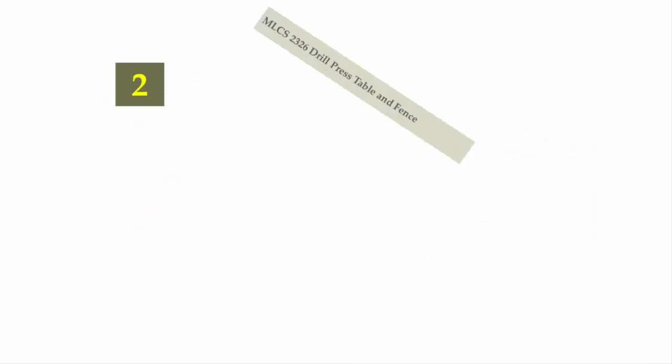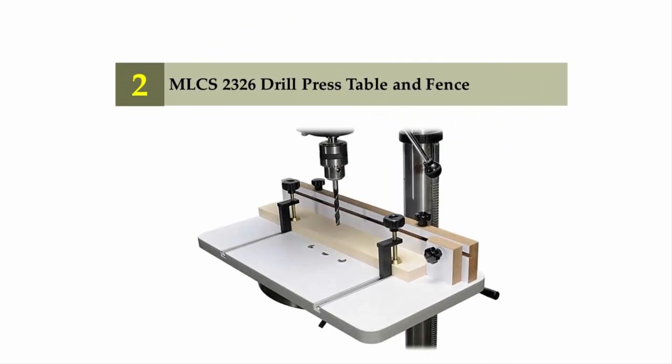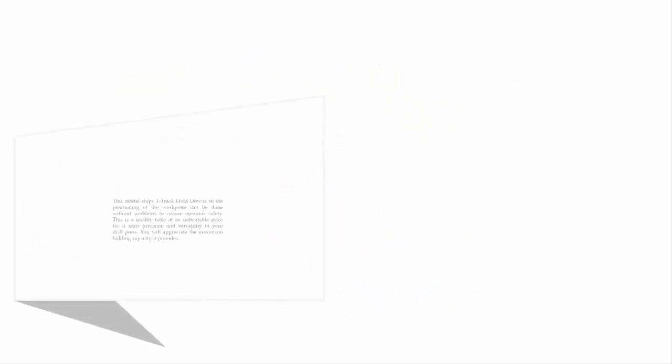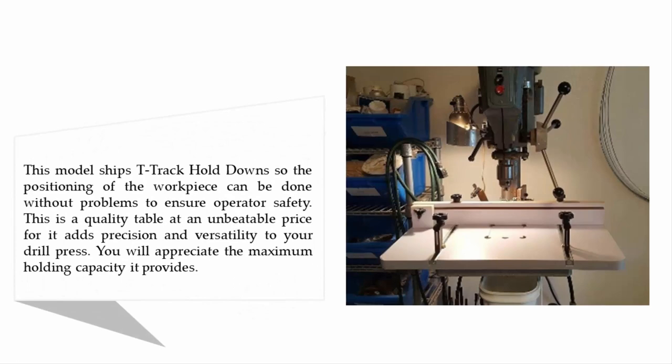Nearing the top of our list at number two, MLCS 2326 Drill Press Table and Fence. This model ships T-track hold downs so the positioning of the workpiece can be done without problems to ensure operator safety. This is a quality table at an unbeatable price, for it adds precision and versatility to your drill press. You will appreciate the maximum holding capacity it provides.